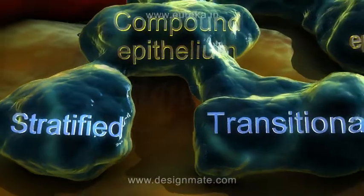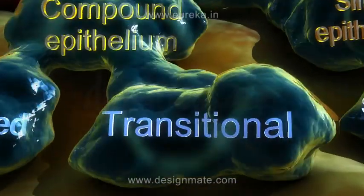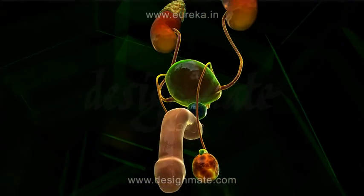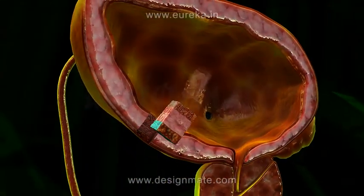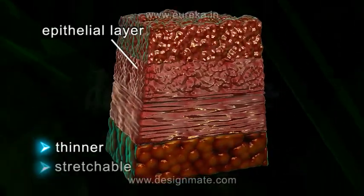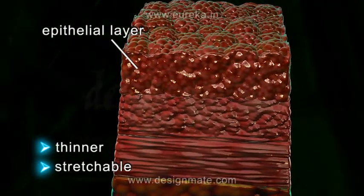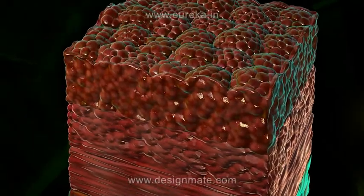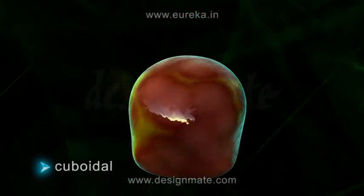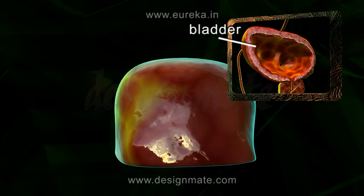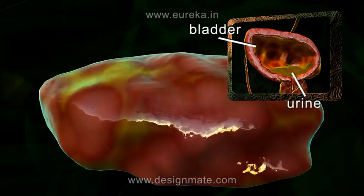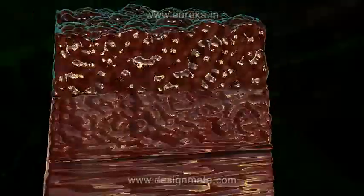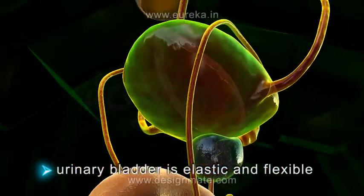Another type of compound epithelium is the transitional epithelium. This is found in the inner lining of the urinary bladder. The epithelial layer is much thin, stretchable, and is made up of cuboidal cells. The cells appear cuboidal when the bladder is empty but can stretch and flatten considerably as the bladder accumulates urine. Thus, the urinary bladder is elastic and flexible.